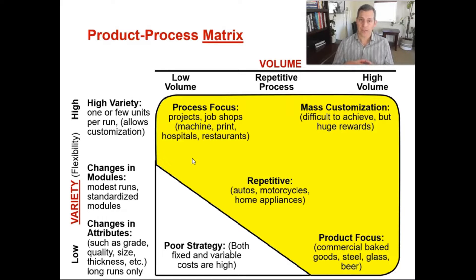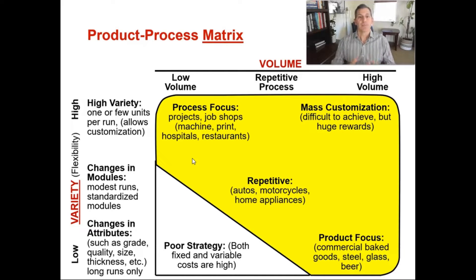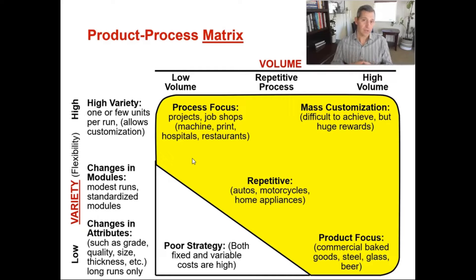In the middle is the repetitive process focus. That is where you're going to have medium volume and medium flexibility or variety. A good example of this could be automobiles, or as the book example of Harley-Davidsons — this is where you could have assembly lines, but there's still some customer variety. So you can make changes as you go because not all customers want the same exact thing, but it's not fully customized. An example would be if you're going to buy a Toyota Tacoma — they're going to come with different size engines, cloth and leather, more electronic bells and whistles and upgrades that you can buy. There's probably about 10 to 15 different Toyota Tacomas you could buy.